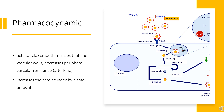Amiodarone prolongs the QRS duration and QT interval. In addition, a decreased SA (sinoatrial) node automaticity occurs with a decrease in AV node conduction velocity. Ectopic pacemaker automaticity is also inhibited. Thyrotoxicosis or hypothyroidism may also result from the administration of amiodarone, which contains iodine and interferes with normal thyroid function.